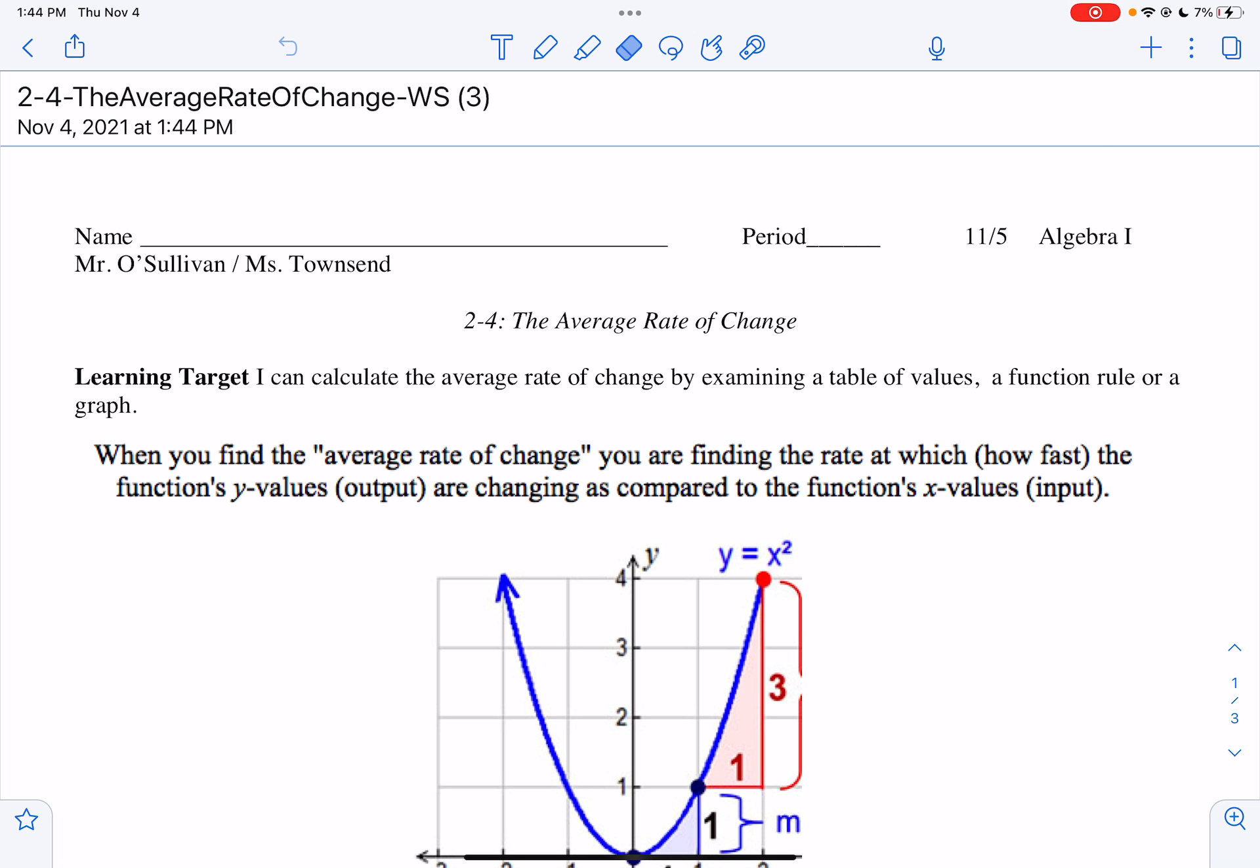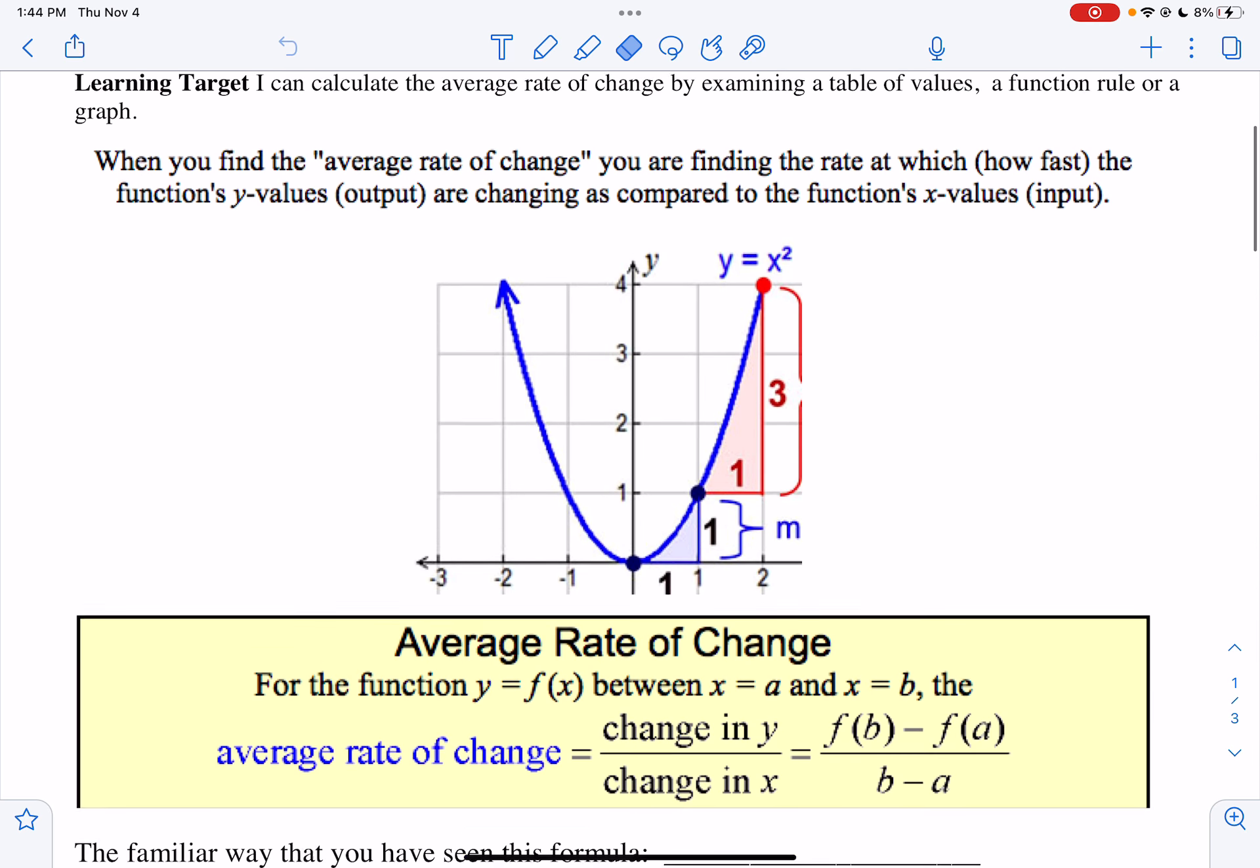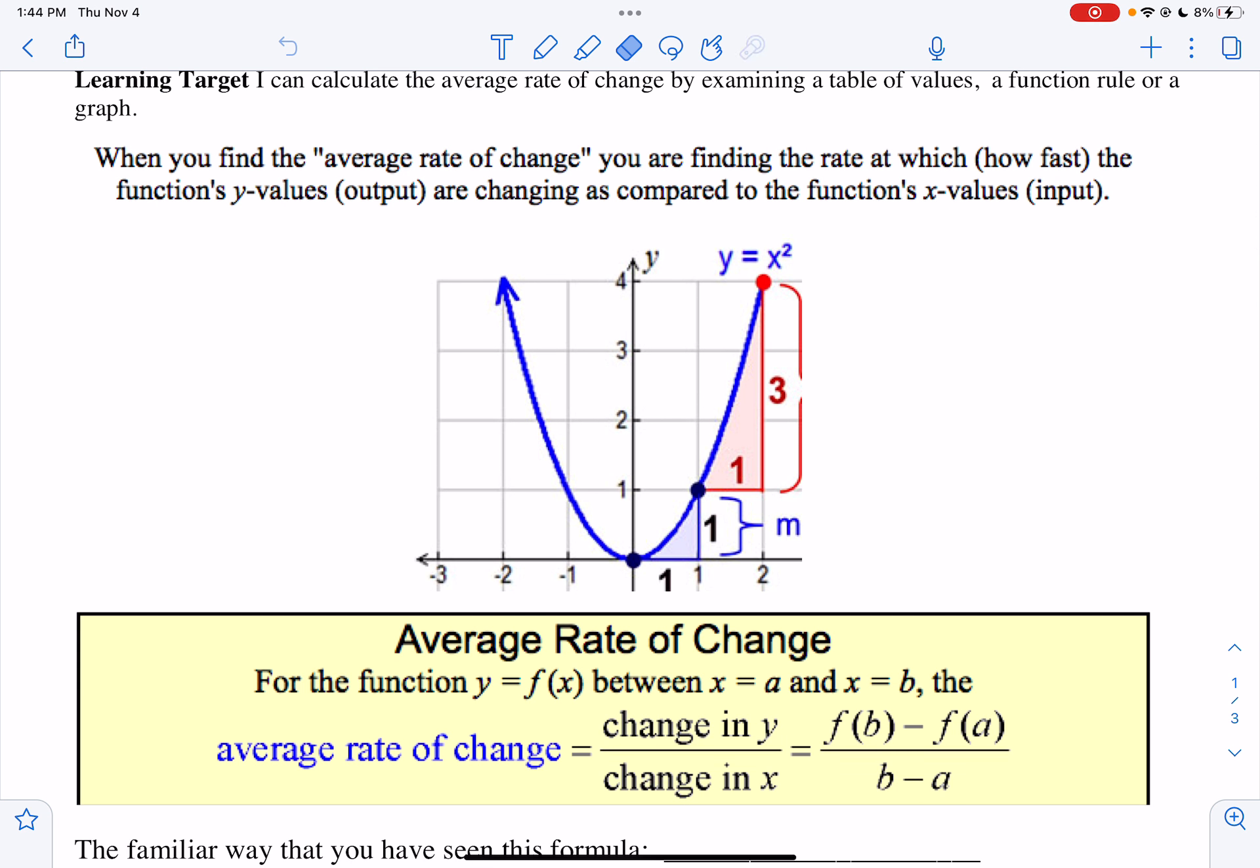Average rate of change is something you did learn in middle school. You just might not have heard the term average rate of change. I'm going to say AROC, so that's our abbreviation for it. When you're finding the average rate of change, or AROC, you're finding the rate at which the function's y values, which are your outputs or ranges, are changing as compared to the function's x values, or inputs, or domains.